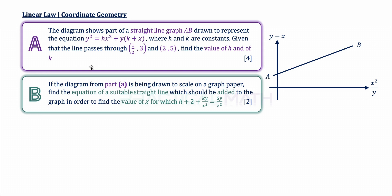In part B of the same question, the diagram from part A is drawn to scale on graph paper. Find the equation of a suitable straight line which should be added to the graph in order to find the value of x for which h plus 2 plus ky over x squared equals 5y over x squared. That's a two-mark question.